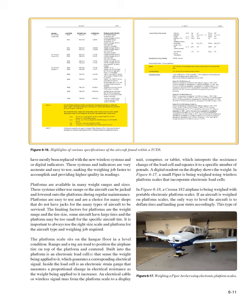A digital readout on the display shows the weight. In Figure 6-17, a small Piper is being weighed using wireless platform scales incorporating electronic load cells. In Figure 6-18, a Cessna 182 is being weighed with portable electronic platform scales. If an aircraft is weighed on platform scales, the only way to level the aircraft is to deflate tires and landing gear struts accordingly. These systems are very accurate and easy to use, making the weighing job faster and providing higher quality readings. Platforms are available in many weight ranges and sizes.